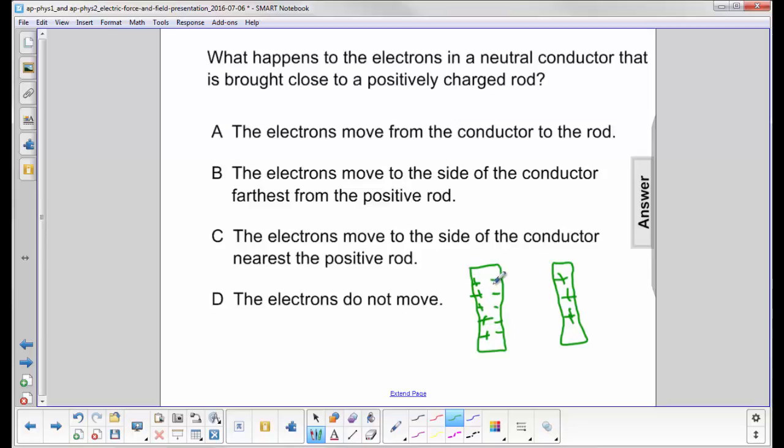So the question was, what happens to the electrons? Well, they're not moving from the conductor to the rod because there's still this air which is acting as an insulator. The electrons are not moving further away from the rod. They're actually moving to the side of the conductor nearest the positive rod. The answer is C.